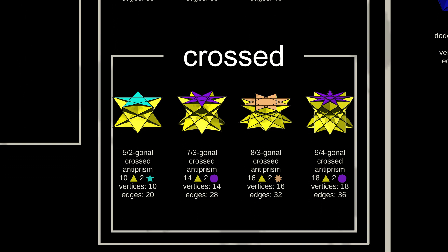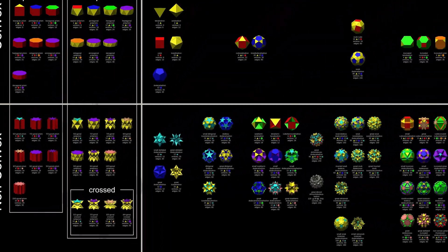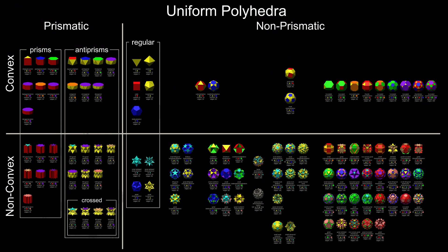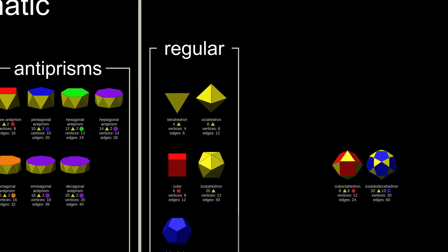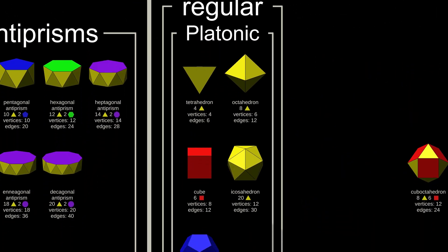Moving across to the polyhedra with three-dimensional symmetry, we start with the regular polyhedra, which are the convex Platonic solids and the non-convex Kepler-Poinsot polyhedra.